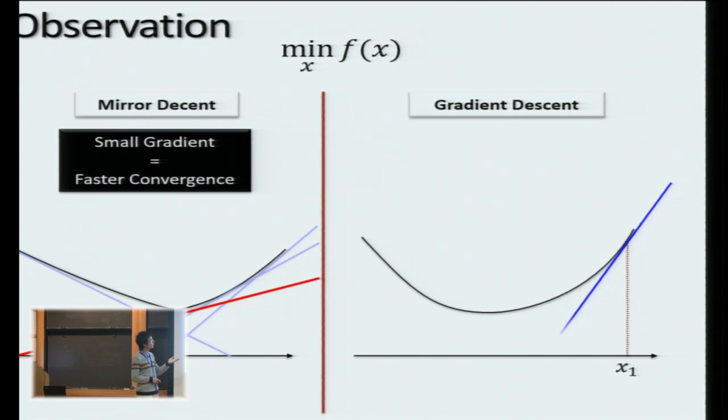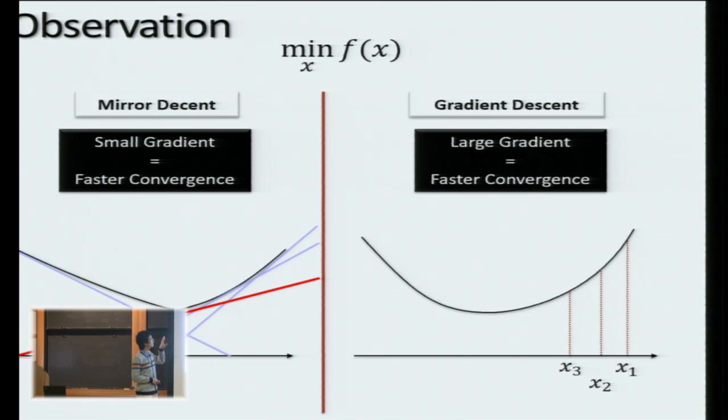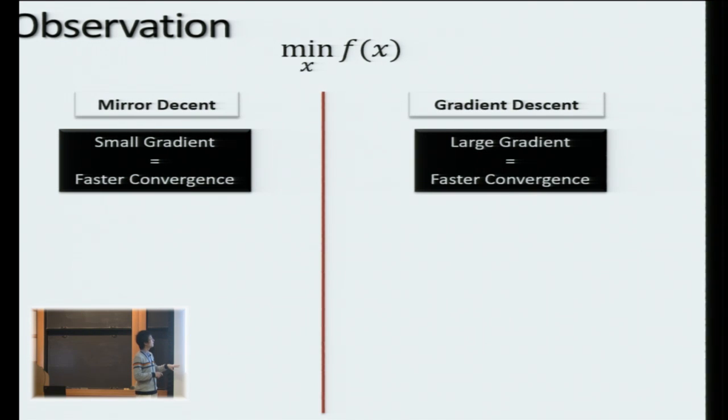And this phenomenon is actually very orthogonal to what is going on in gradient descent. That is, if we have large gradient over there, we could in one step decrease the objective value by a lot. And if we have a relatively smaller gradient, we could decrease it by less. So one could formalize this mathematically, but from a very high level, in these two words, we have very complementary phenomenon. That is, large gradient and small gradient implies faster convergence in either side.